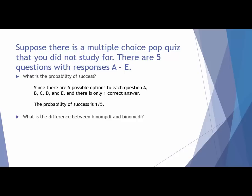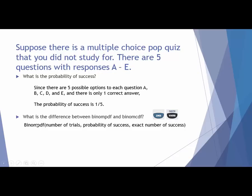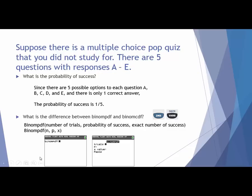What's the difference between binomial CDF and binomial PDF functions in your calculator? To locate them, go under second and distributions. Binomial PDF works by taking the number of trials — we have five questions — finding the probability of success, which is one out of five (0.2), and then the exact number of successes you're interested in. Binomial PDF finds the probability of getting one specific outcome.